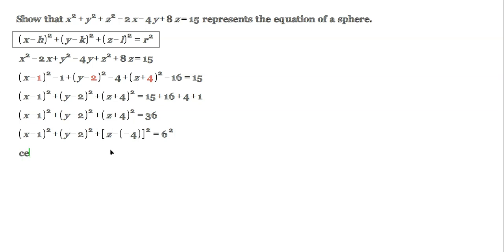So that means that the center of the sphere is the following point: 1, 2, negative 4. And the radius of the sphere is 6. We were able to take the equation as given and convert it through the sequence of steps, completing the square and all that, into the correct form. So it's the equation of a sphere.